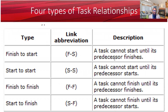In diagramming techniques used in project management software applications, we use what we call activity on node. There are four types of task relationships: finish to start, start to start, finish to finish, and start to finish. The first three are very common in project schedule management; the last one, not so much. A lead time is most useful when you have a finish-to-start relationship and you'd like to accelerate the start of the successor activity. A lag time can be used in all sorts of relationships — it is a waiting time between two activities that have a task relationship.